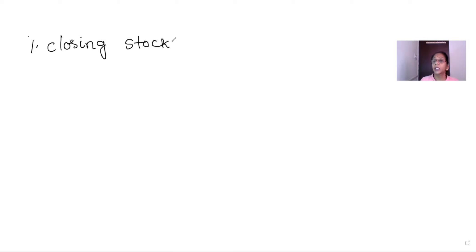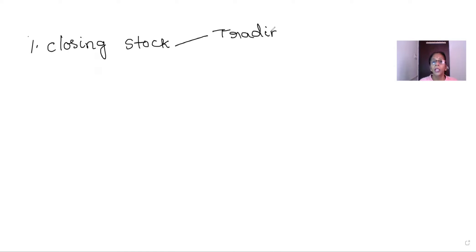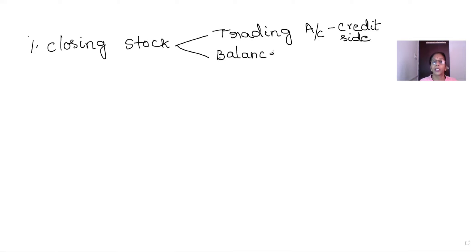Any adjustment would be taken twice into the books of accounts — once for including them into the books of accounts, and again shown as part of the balance sheet entry. Closing stock would be taken on the credit side of the trading account; when preparing the trading account, it is shown as 'By Closing Stock' on the credit side. Also, closing stock would be shown as a current asset on the asset side of the balance sheet.